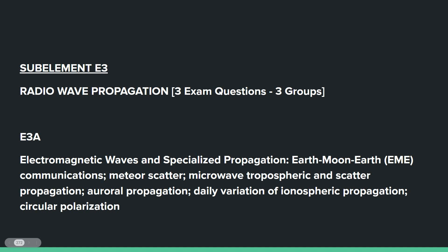And we're back. Sub-element E3, Radio Wave Propagation. Three exam questions come out of the three groups in this sub-element. E3A is electromagnetic waves and specialized propagation: Earth-Moon-Earth communications, meteor scatter, microwave, tropospheric, and scatter propagation, auroral propagation, daily variations of ionospheric propagation, and circular polarization.